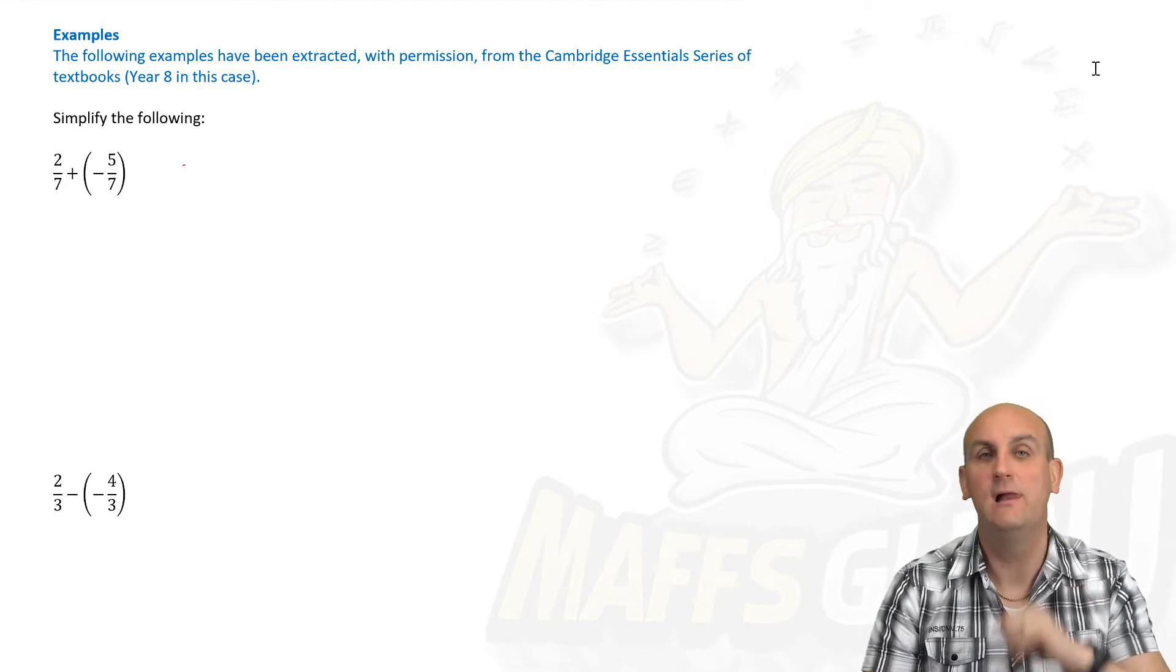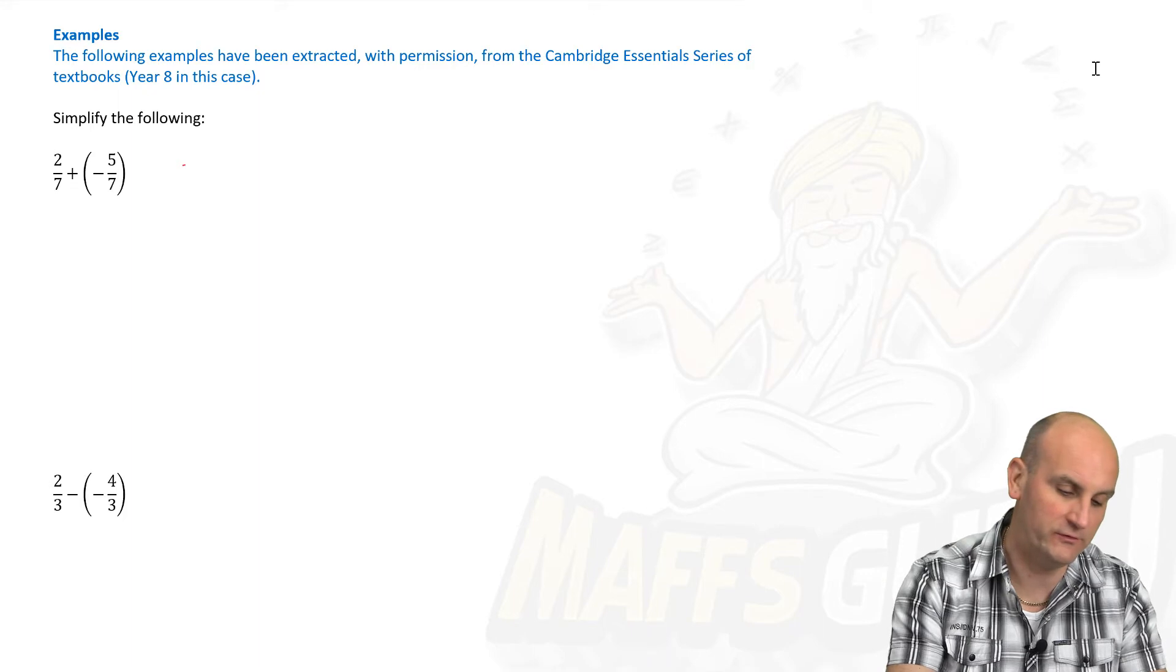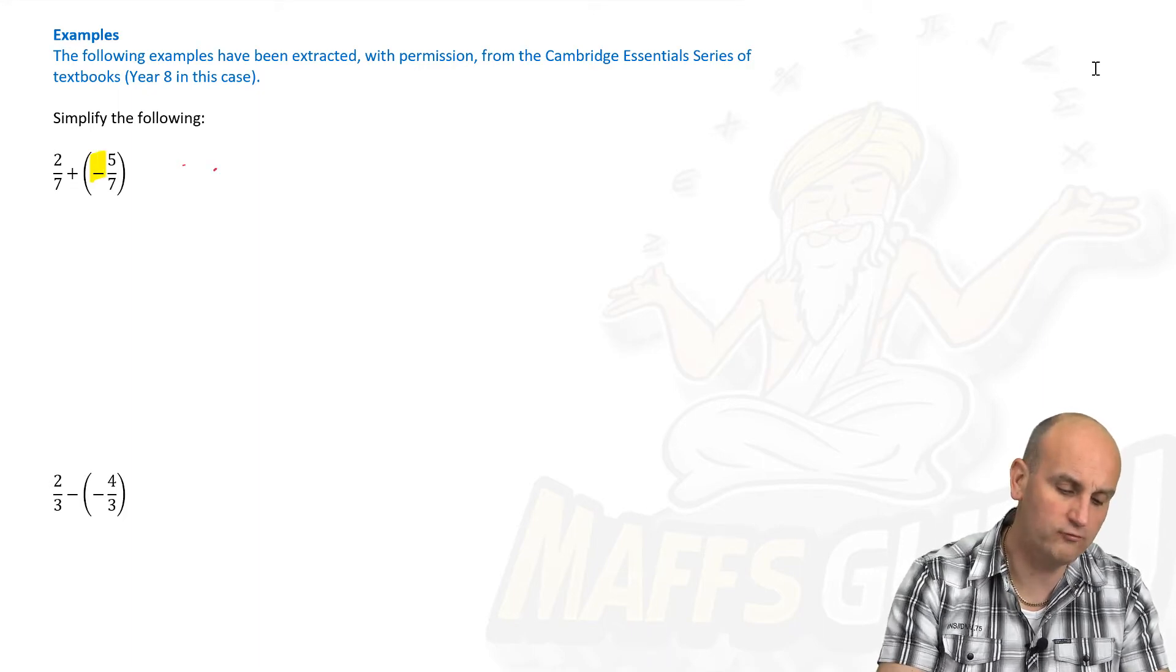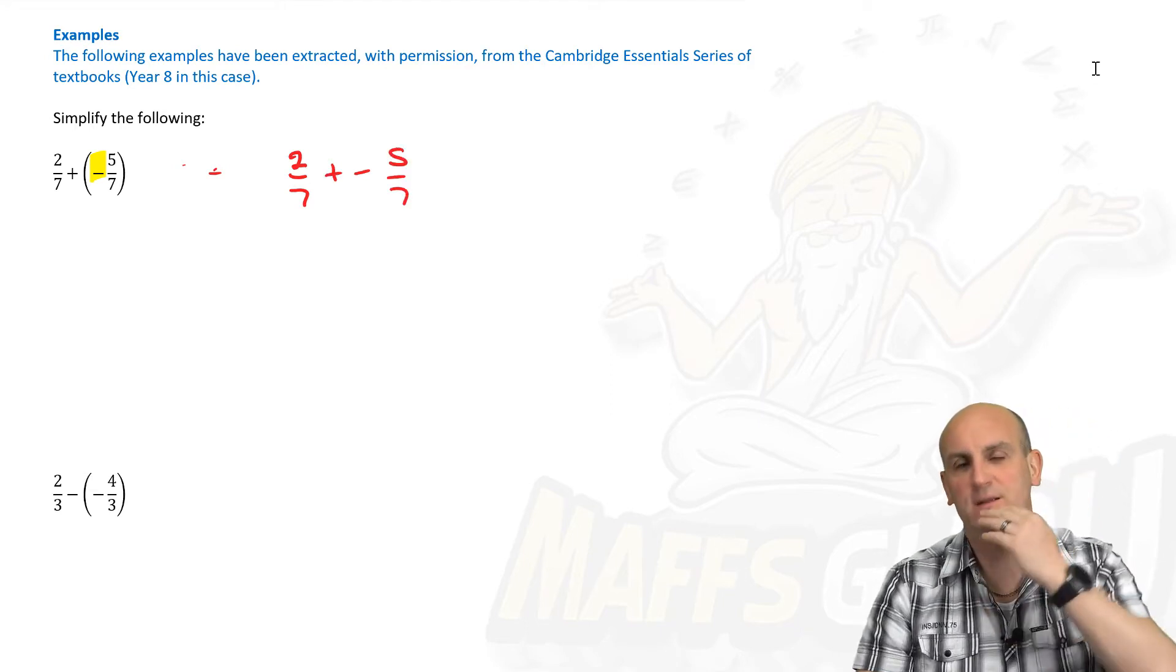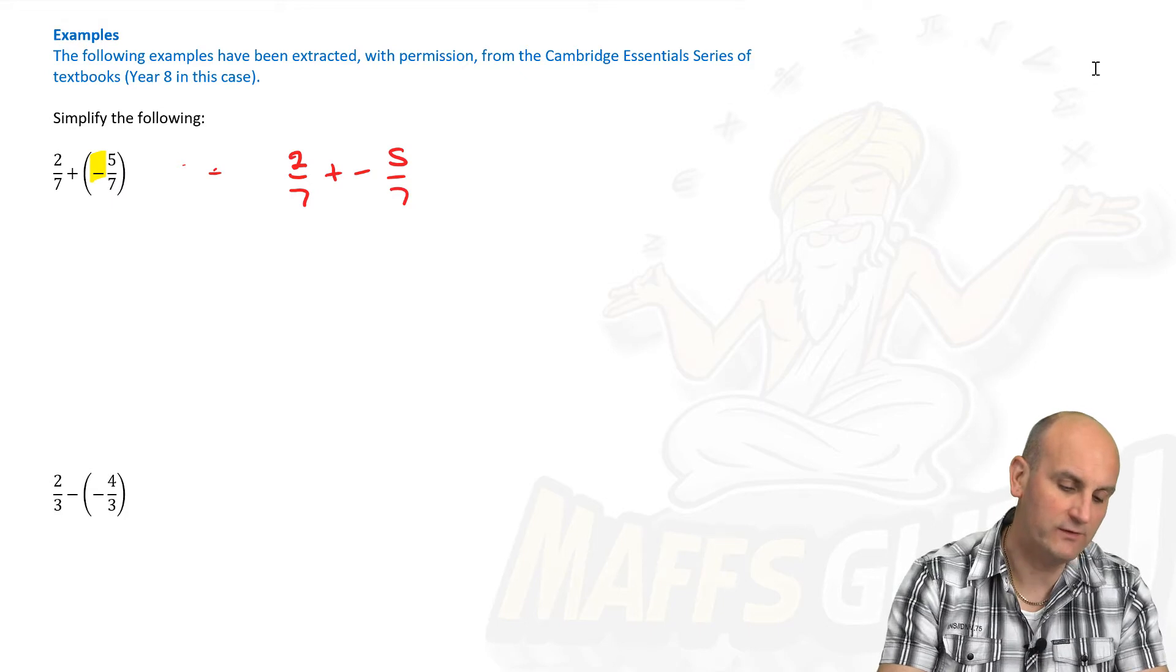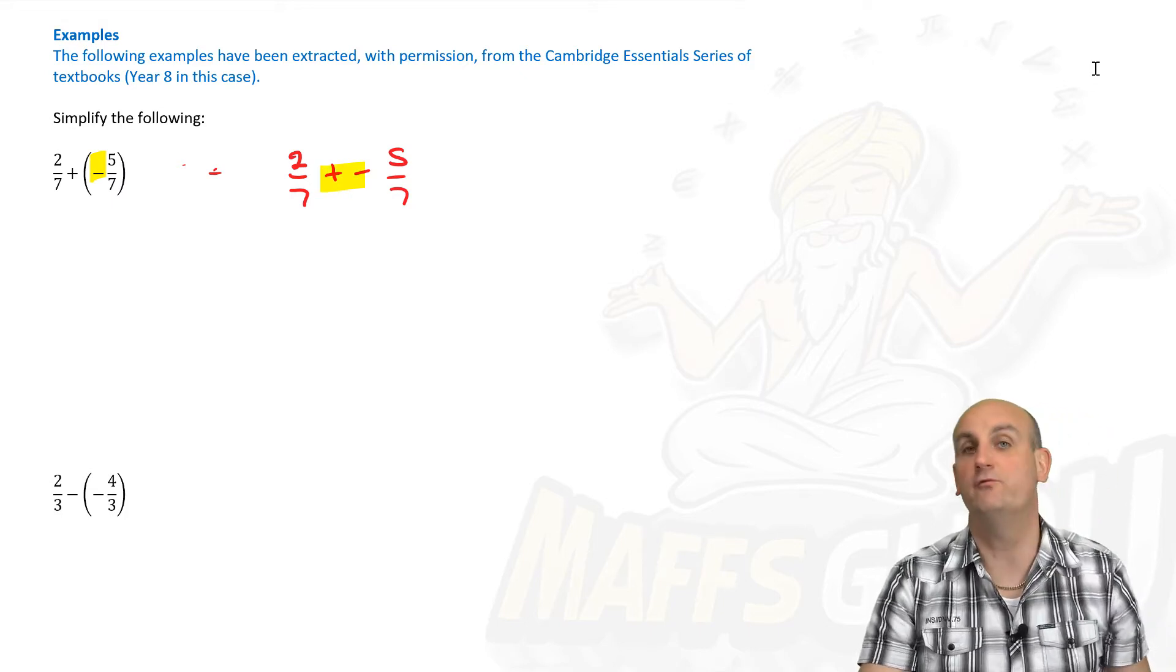Okay, so we have here, now remember the brackets. The brackets are there just to help you see that negative sign. I always rewrite the question out without the brackets to give me plus minus five on seven. Now the minute I say plus minus, when in maths have we ever seen a plus and minus written side by side? We haven't.